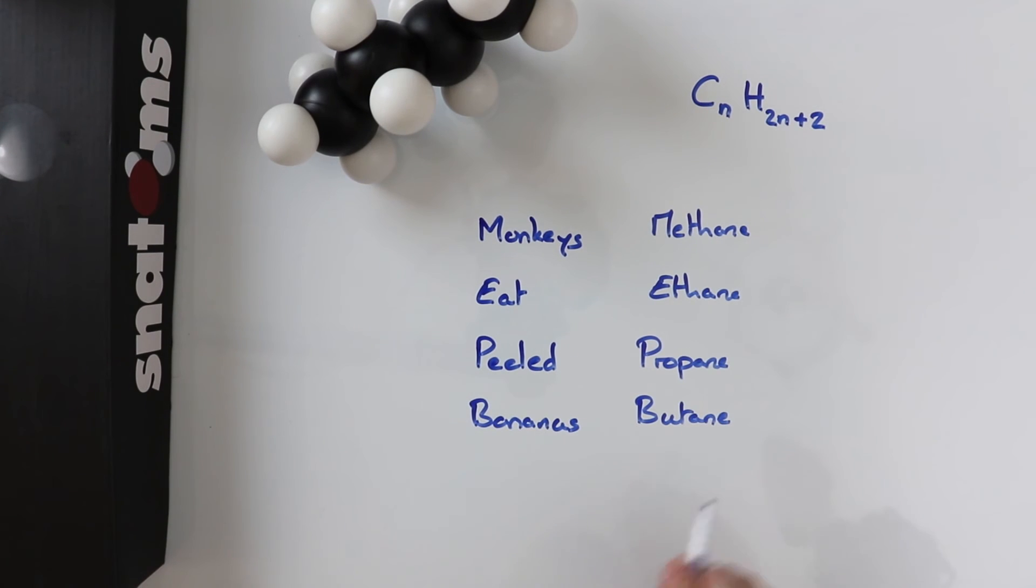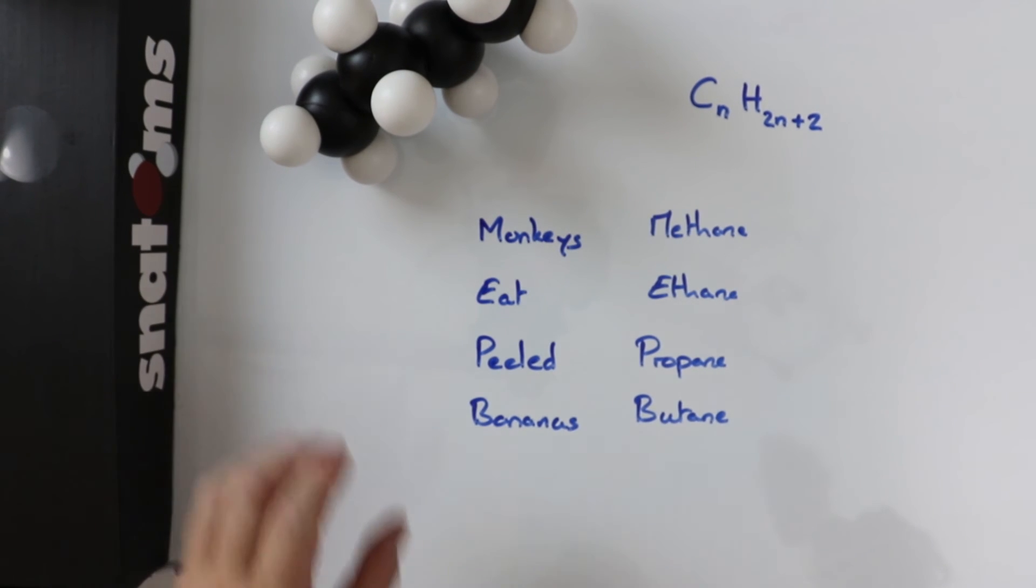After these, the carbon chains have easier names: pentane for five, hexane for six, heptane for seven, octane for eight.